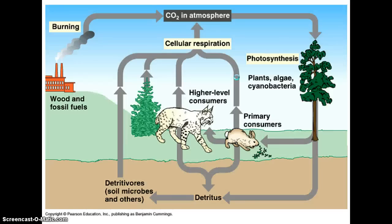A nutrient is defined as any chemical substance that a living organism requires to stay alive. The first nutrient we're going to talk about that cycles through an ecosystem — like water, but unlike energy — is carbon. This is the carbon cycle. It's not a neat round wheel like the water cycle picture, but there are some really important things going on here.